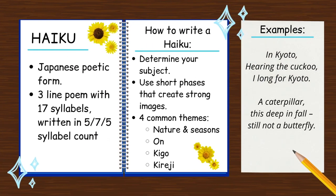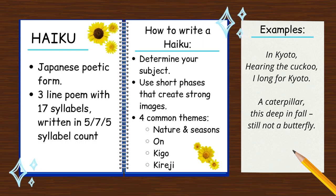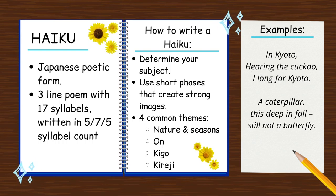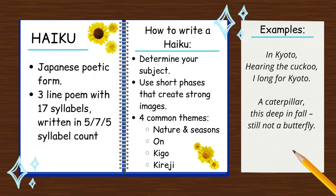A haiku is a Japanese poetic form. It consists of 17 syllables arranged in three lines of five, seven, and five syllables, which should be said in one breath. For example, the first line would have five syllables, the second line would have seven, and so on.